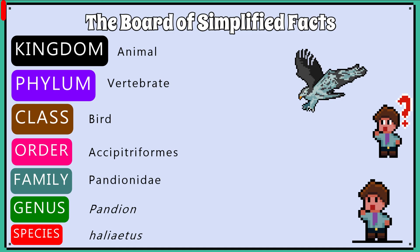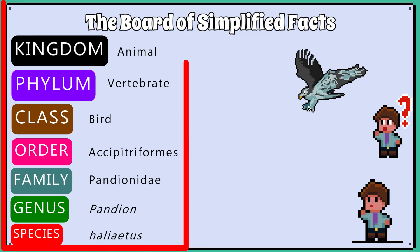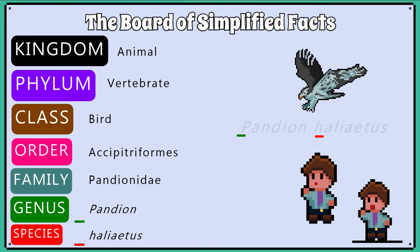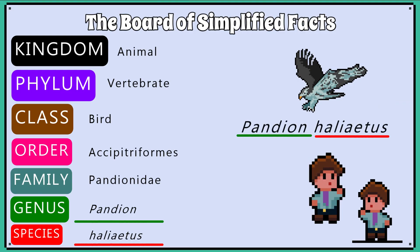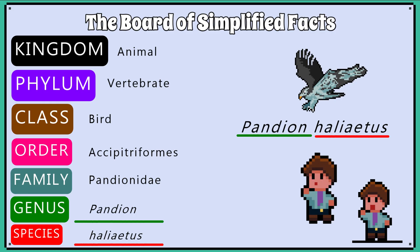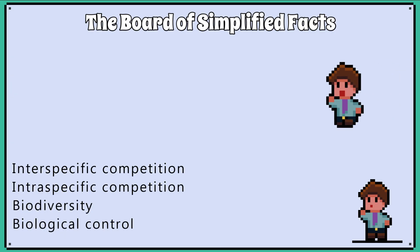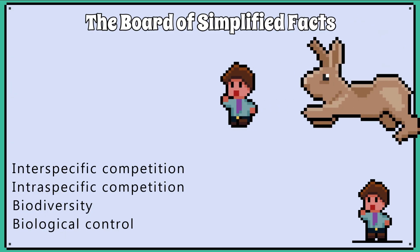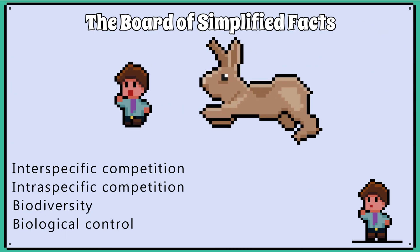Don't worry though — you will always be given the information needed to answer the question. Just make sure you follow the style and format and select the genus and species when forming the scientific name. In the next video we will look at biodiversity, competition, and biological control.